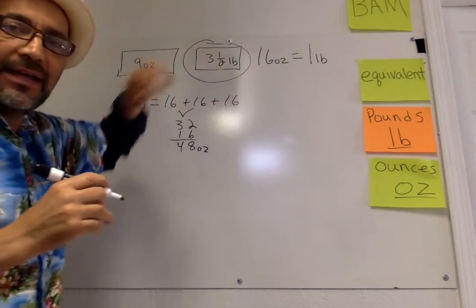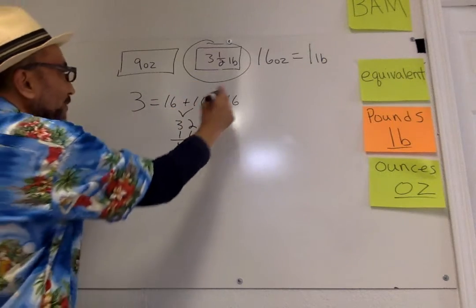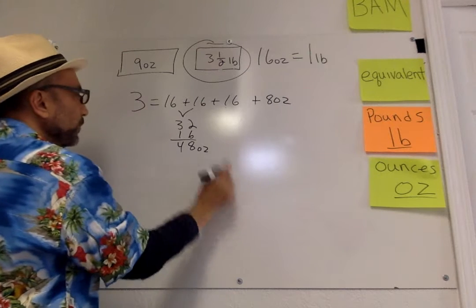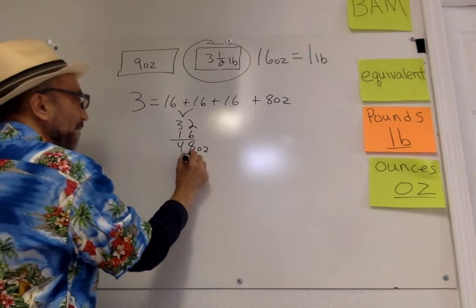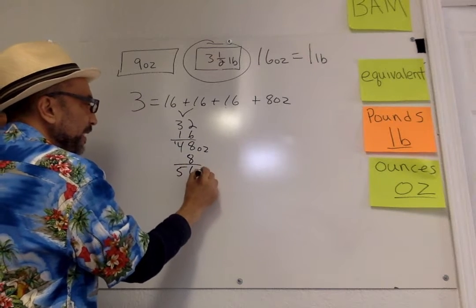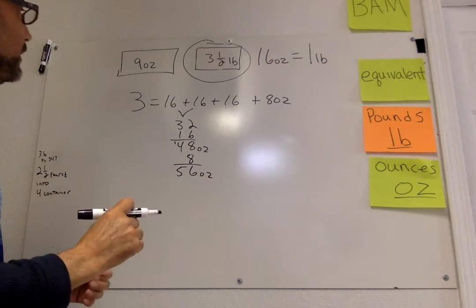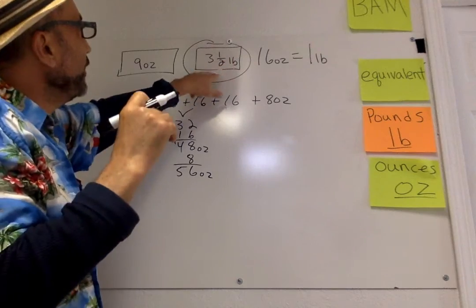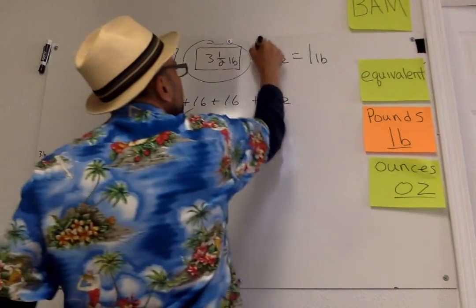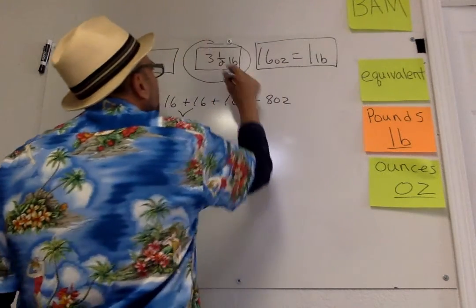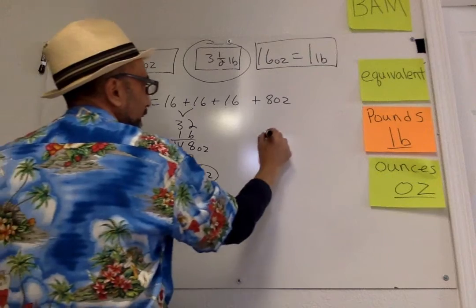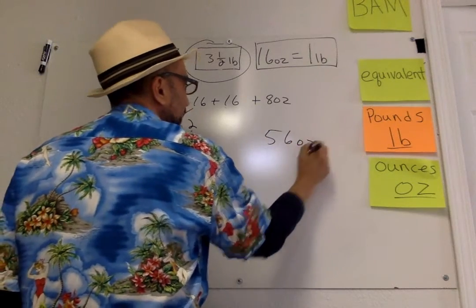But we still have the half a pound. So we add that half a pound, plus half a pound is what? 8 ounces, right? So if I add that half a pound, it's going to be 56 ounces. So this 3.5 pounds actually equals... Let me put that separate here. 3.5 pounds now we know equals 56 ounces.